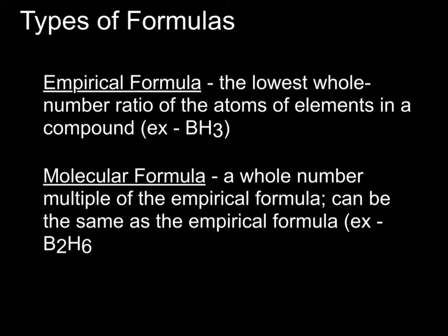The empirical formula is the lowest whole number ratio of atoms the elements in a compound can have. One example is BH3. The molecular formula, on the other hand, is the whole number multiple of the empirical formula. It could be the same as the empirical formula, or it can be where the subscripts are multiplied by a common factor — for example, B2H6.